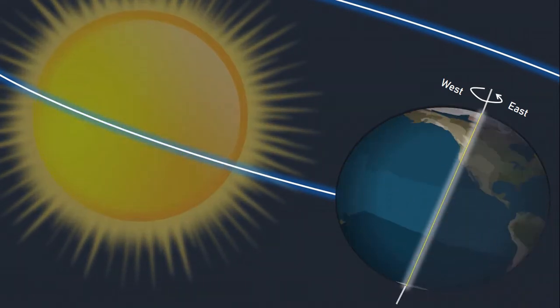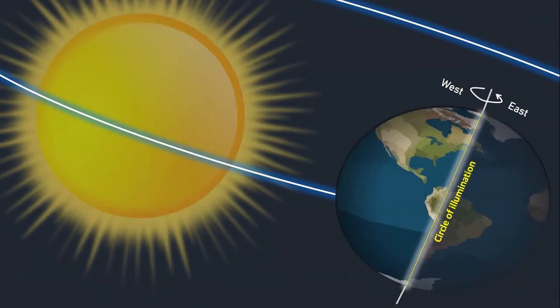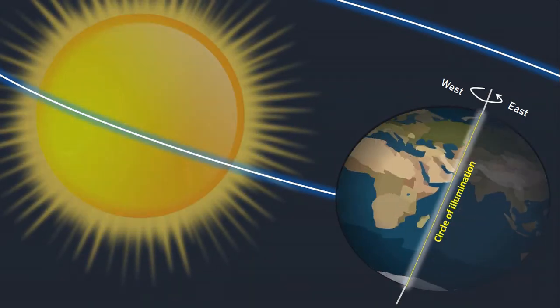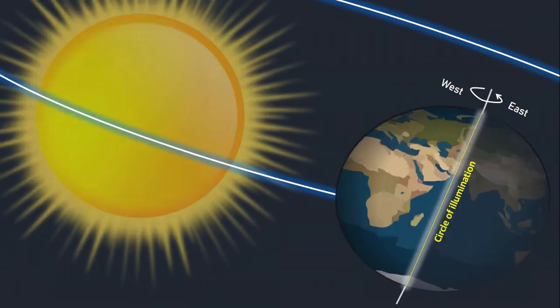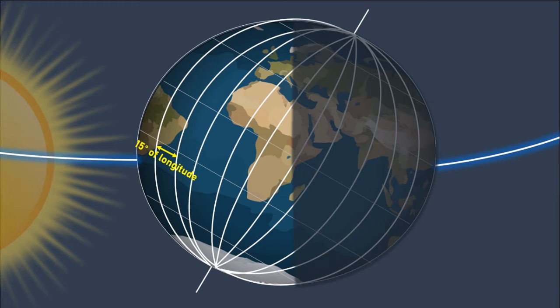Exactly one half of Earth is illuminated by Sun at any given time. The circle of illumination is the line which separates the illuminated and dark halves of Earth. It is constantly changing in position across Earth's surface.